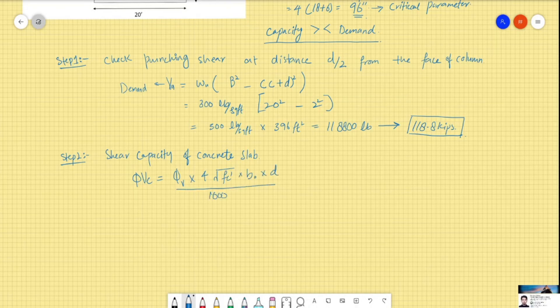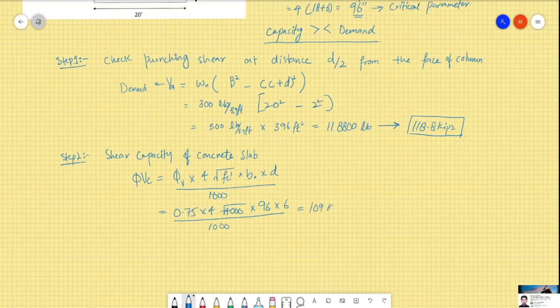Lambda will be 1, so I'm ignoring that. Inputting the values: 0.75 multiplied by 4 and the root of 4000, multiplied by b effective shear parameter of 96 and d of 6, so it comes out to be 109 kips. This is our capacity.